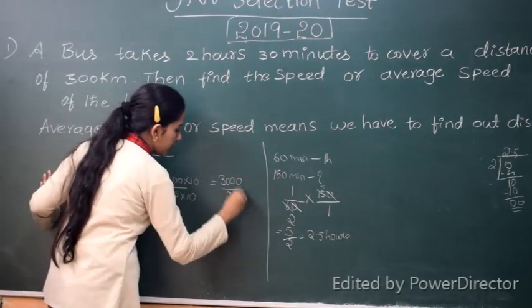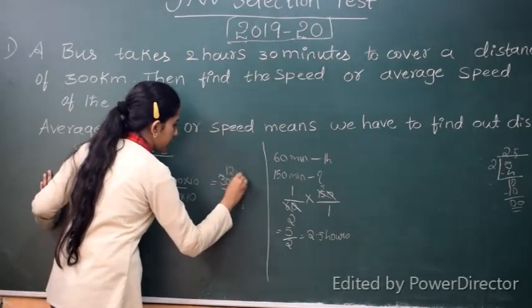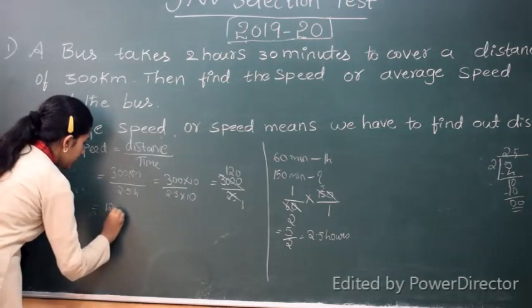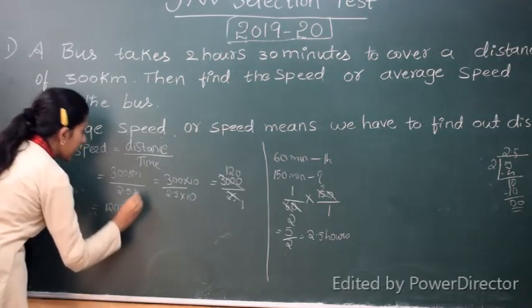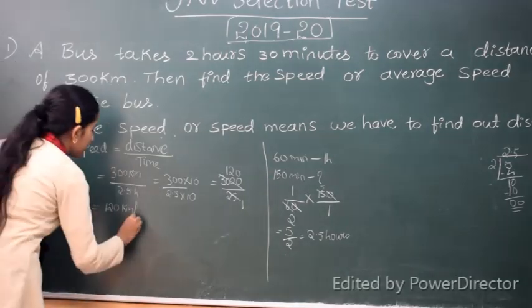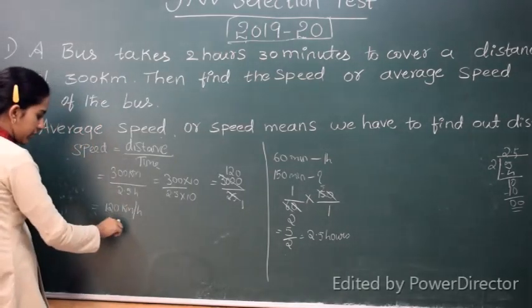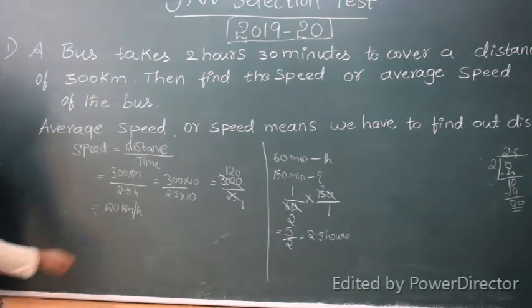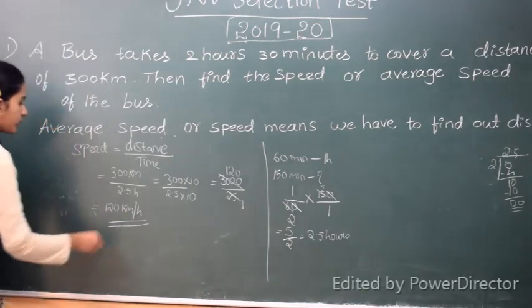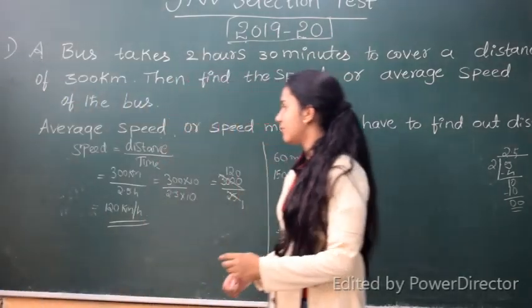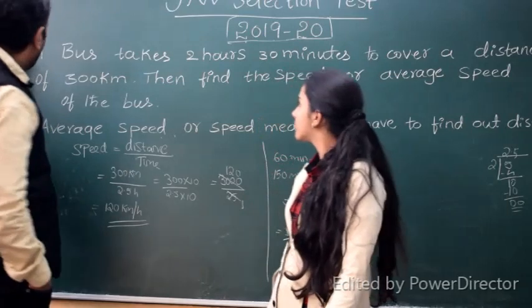So we will get 3,000 divided by 25. So that is 25 once is 25, 120. So 120 km is the average speed of the bus. So the bus travels 120 km in one hour. So that is 120 km per hour is the average speed of the bus.